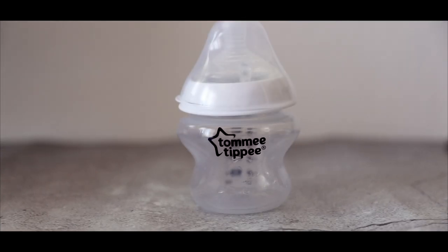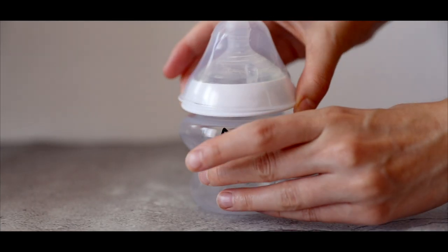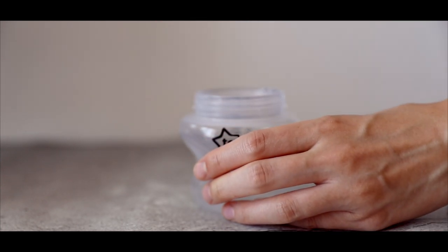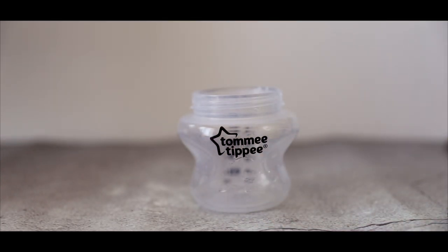Moving on to my second method, I am starting out with my bottle again, Tommy Tippee, and I remove the cap. For this method, I am using cornflour and water.